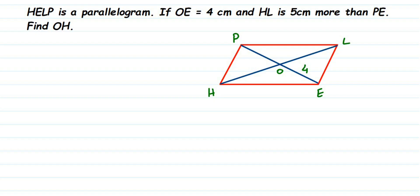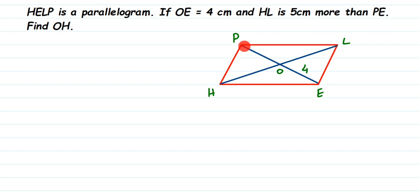Here's a question on parallelogram HELP. HELP is a parallelogram. OE is 4 centimeters, where O is the intersection point of the diagonals HL and PE. The diagonal PE intersects at point O, and we are given OE = 4 centimeters.